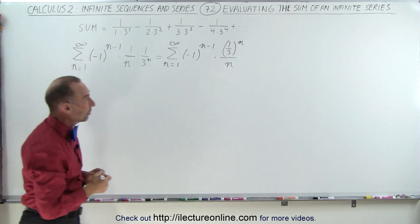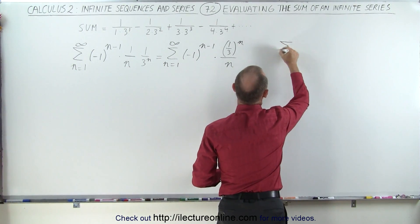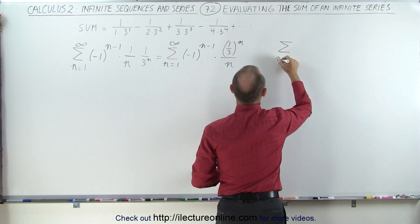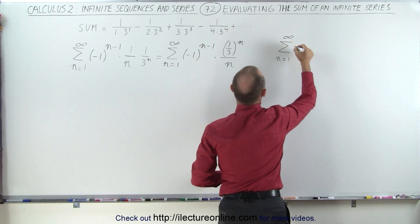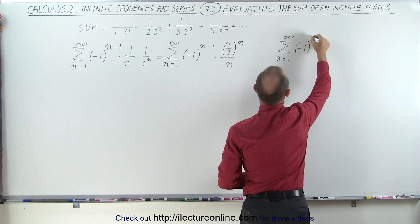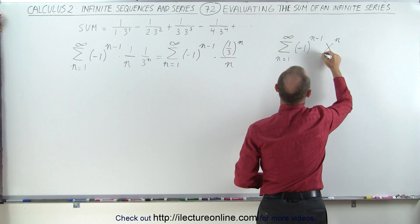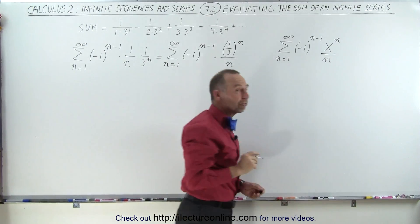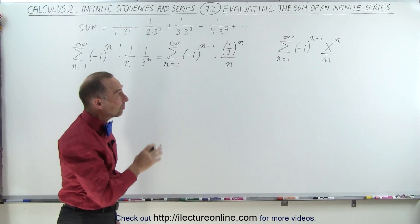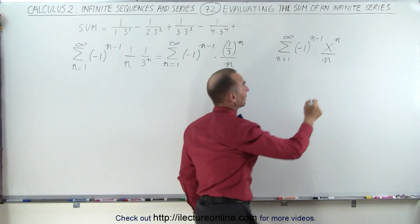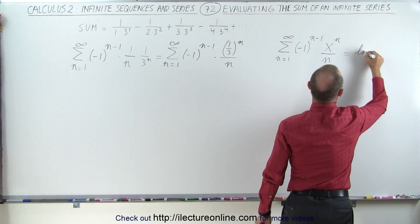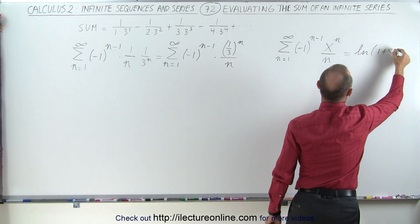Take a look at this. How about the infinite sum from n equals 1 to infinity of minus 1 to the n minus 1 power times x to the n divided by n. Now that should look familiar to most of us. That is actually the infinite sum representing the natural log of 1 plus x.